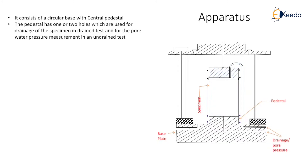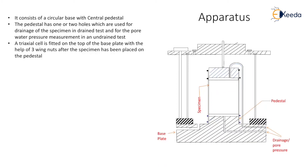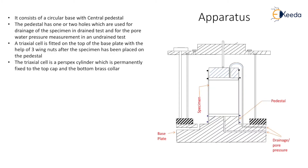The holes are used for drainage in case of a drained test or for pore water pressure measurement in case of an undrained test. A triaxial cell is fitted on the top of the base plate with the help of three wing nuts after the specimen has been placed on the pedestal. The triaxial cell is a perspex cylinder which is permanently fixed to the top cap and the bottom brass collar. These are circular in plan but in cross-section they are shown as two rectangles.